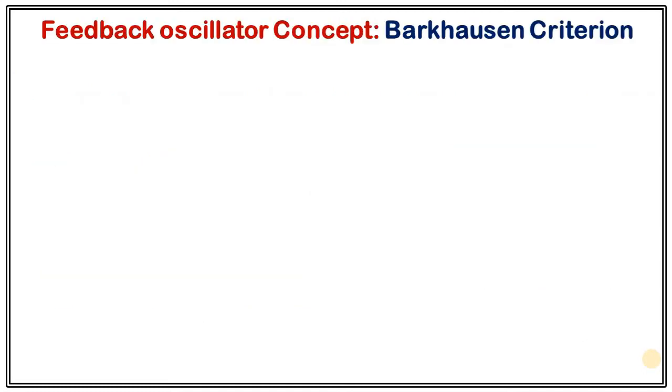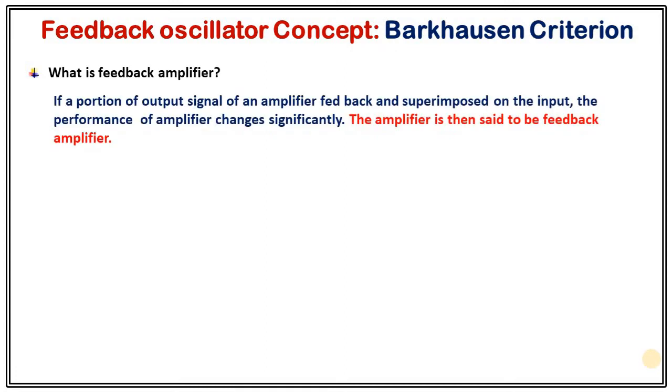So let's begin the Barkhausen criteria. In the previous few lectures we have seen the concept of feedback right. Let's recap it. What is feedback amplifier? If a portion of output signal of an amplifier fed back and superimposed on the input the performance of amplifier changes significantly and the amplifier is said to be feedback amplifier.